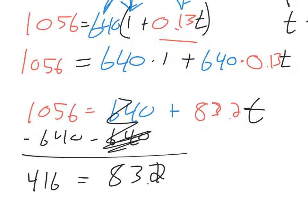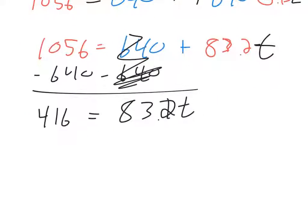So that says 83.2 times T. In order to get rid of the 83.2, you've got to undo it with an opposite operation. So divide by 83.2. That'll turn it into 1.